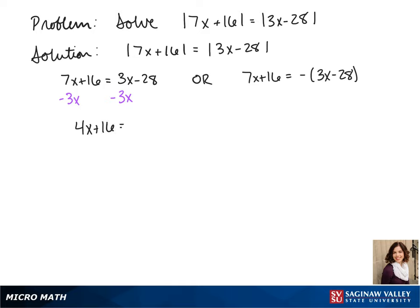First we subtract to get our variable on the same side, so we get 4x plus 16 equals negative 28. We subtract 16 from both sides, and we get 4x equals negative 44. Divide both sides by 4, and we get x equals negative 11.